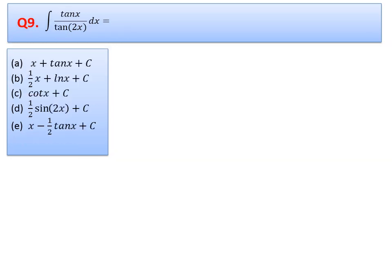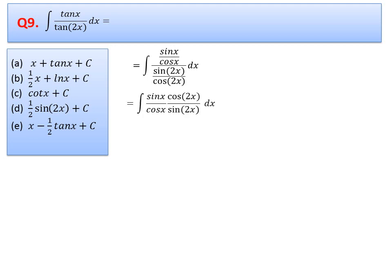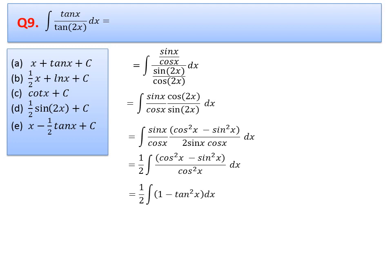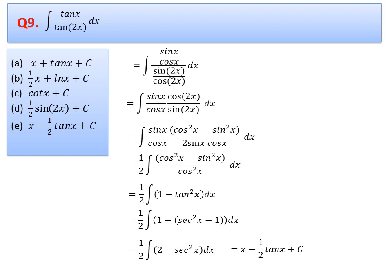Question 9: solve this integral. First convert to sine and cosine form and simplify. Using the double angle formulas for cos(2x) and sin(2x), further simplification leads to splitting the integral. Using the identity for tan²x, integration of 2 gives 2x and integration of sec²x gives tan x. The answer is x − (1/2)tan(x) + C. Option A is correct.